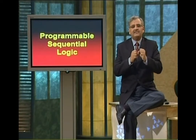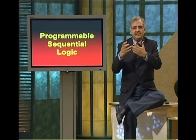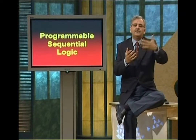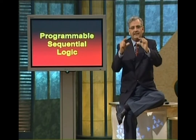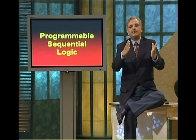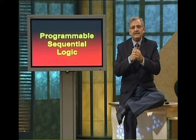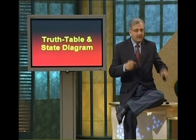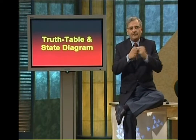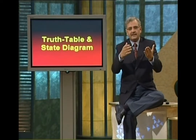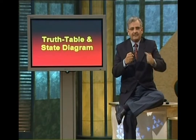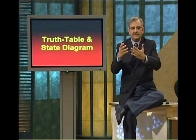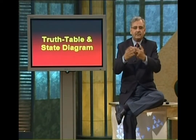Agar aapko yaad ho, humne shuru mein baat ki thi ke sequential circuits jab implement karenge, uski definition ABEL file mein likhne ke alag-alag tarike hain. Ek standard tarika jo hum use karte rahe hain — combination circuits mein bhi aur pichhli teen examples mein bhi — woh equations ki form mein define karna tha. Majeed aur tarike hain: truth table se bhi aap define kar sakte hain, aur ek aakhri tarika — state diagram se bhi define kar sakte hain.